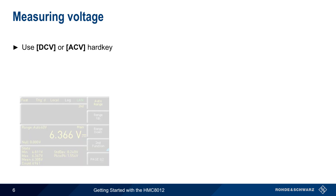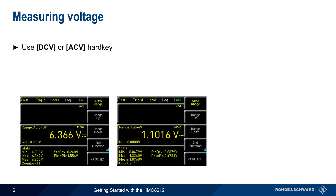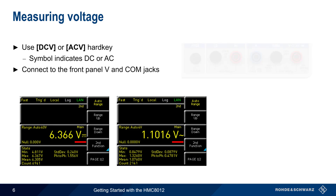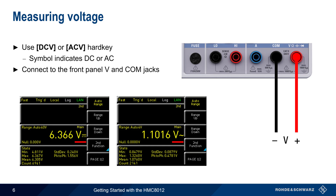Voltage measurements are made by pressing the DC volts or AC volts hard keys. A special symbol behind the V indicates whether DC or AC is being measured. On the front panel, the V and COM jacks are used to connect to the measured voltage. Note that AC voltage measurements made by the HMC 8012 are always true RMS voltage values, which provides an accurate value even for non-sinusoidal AC signals.